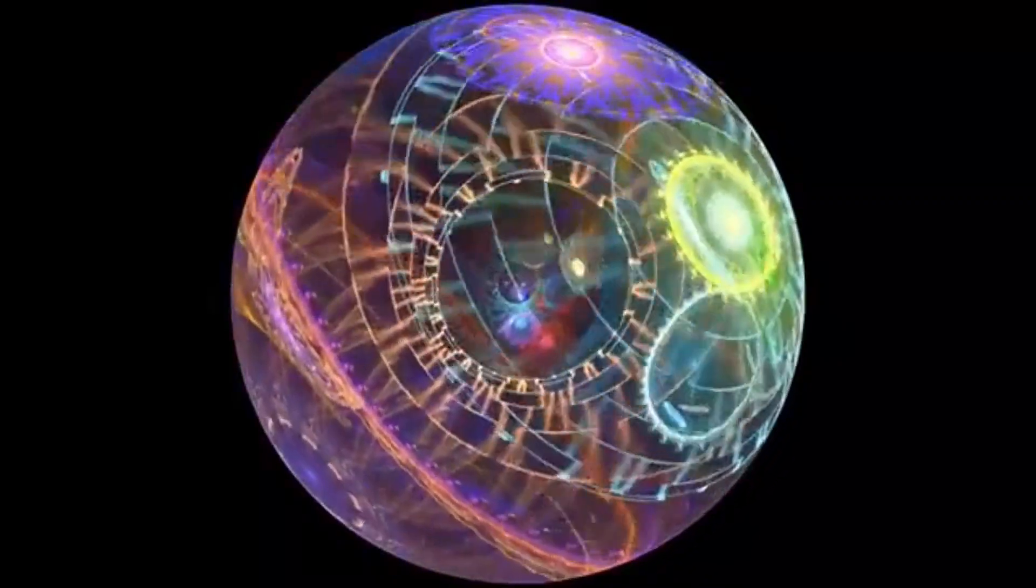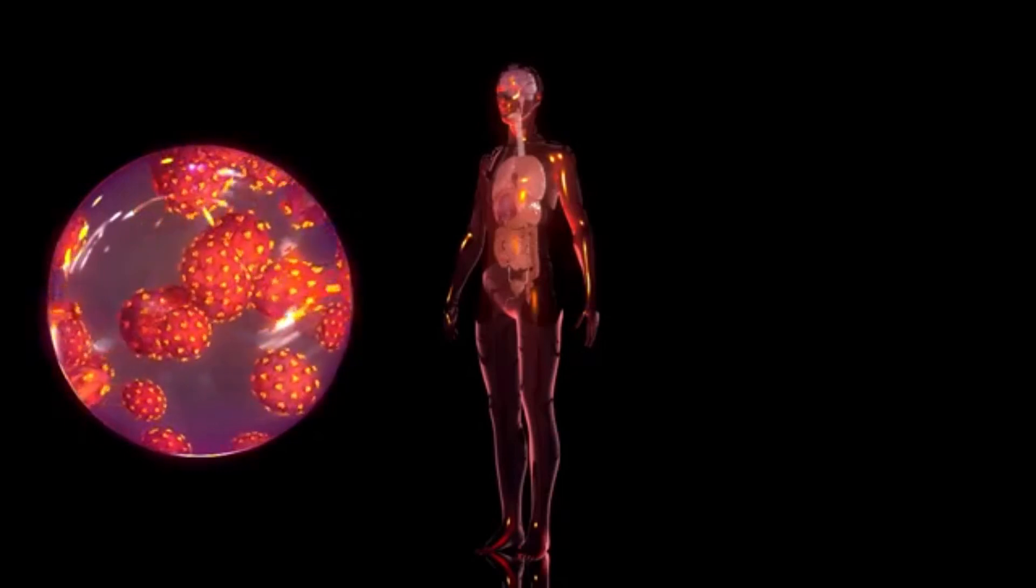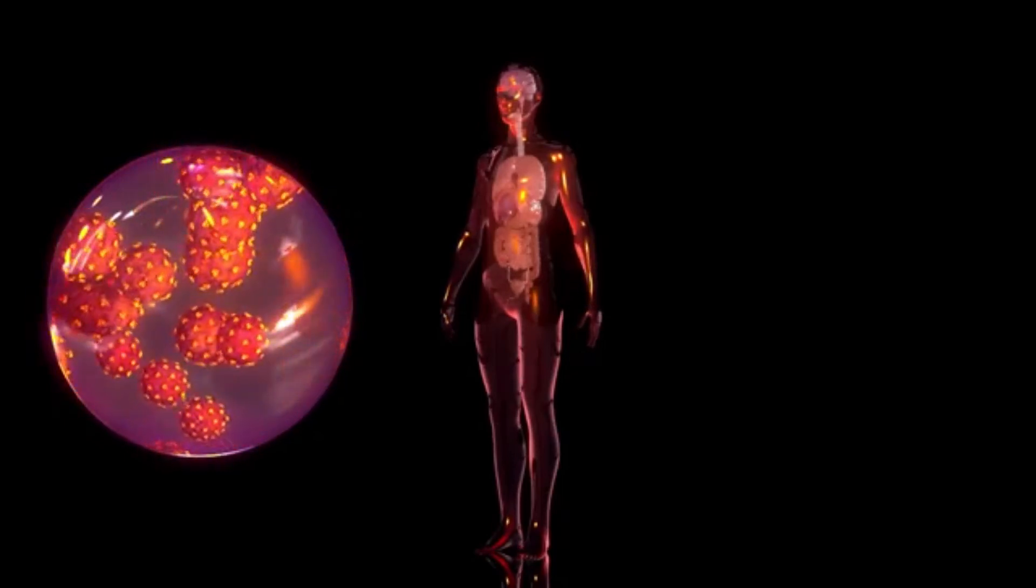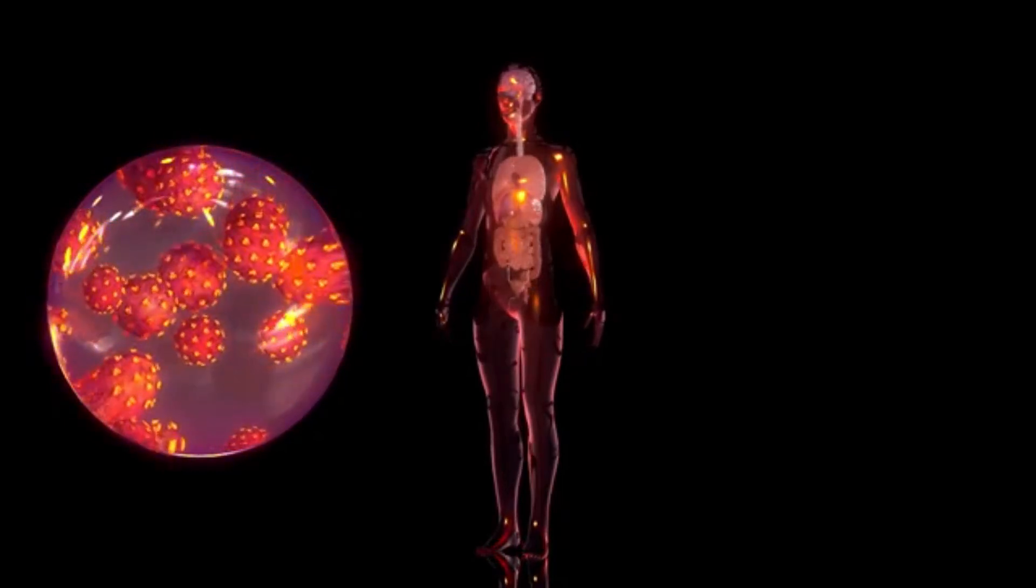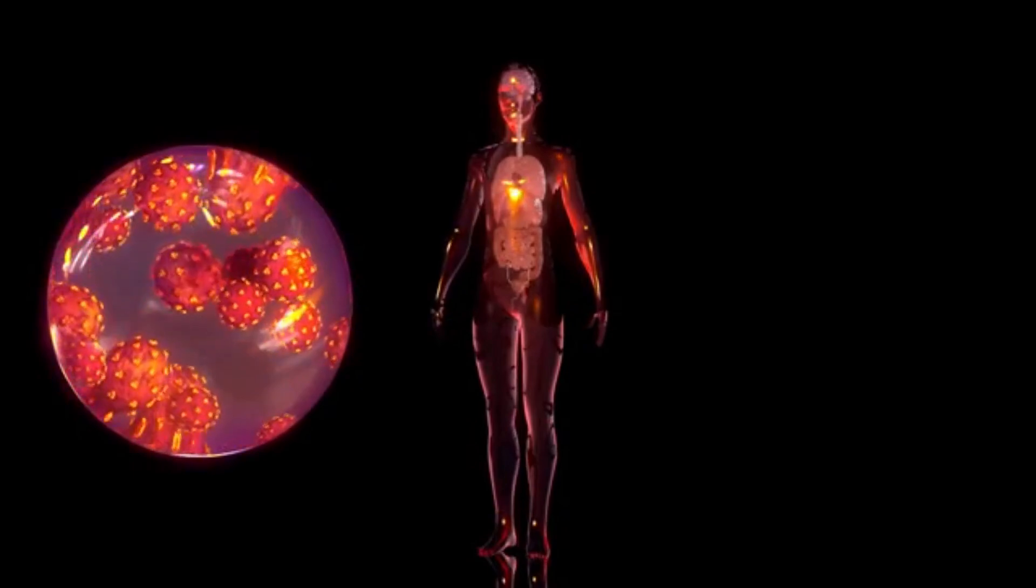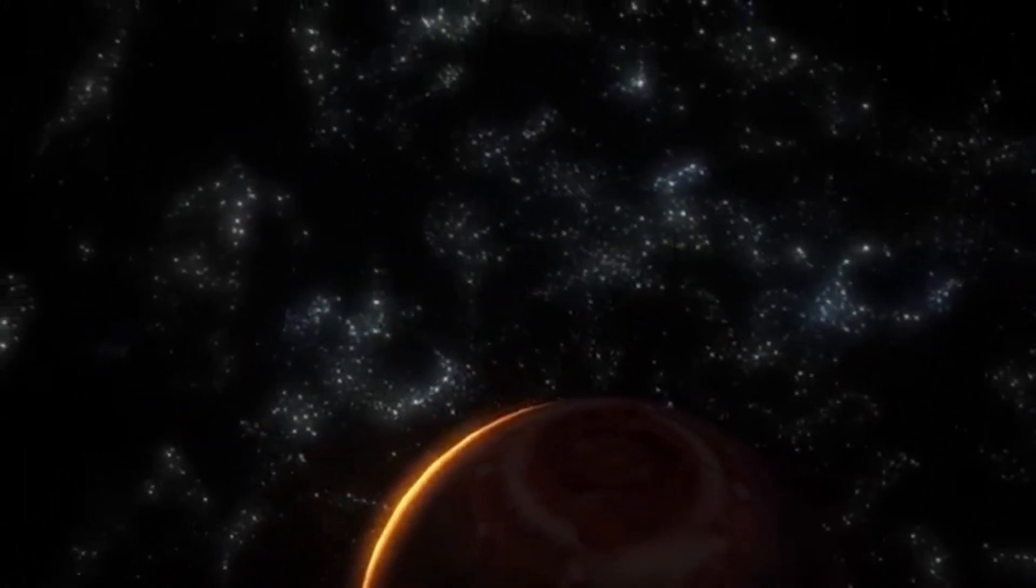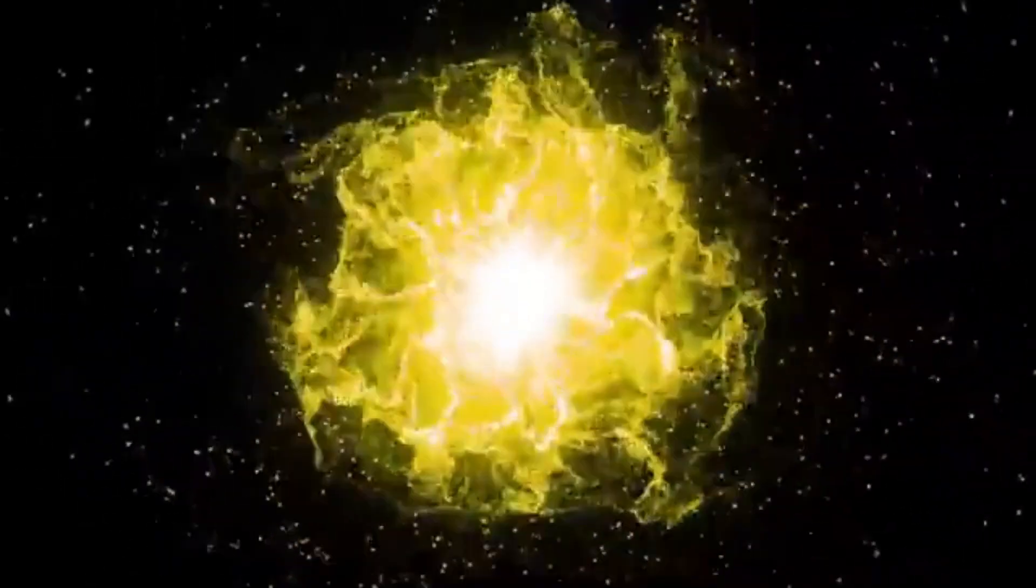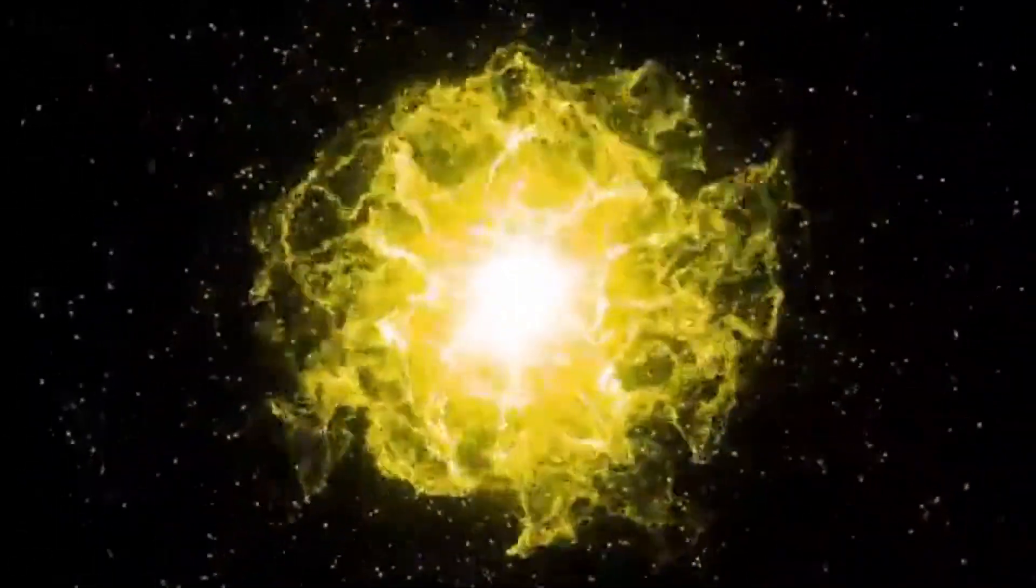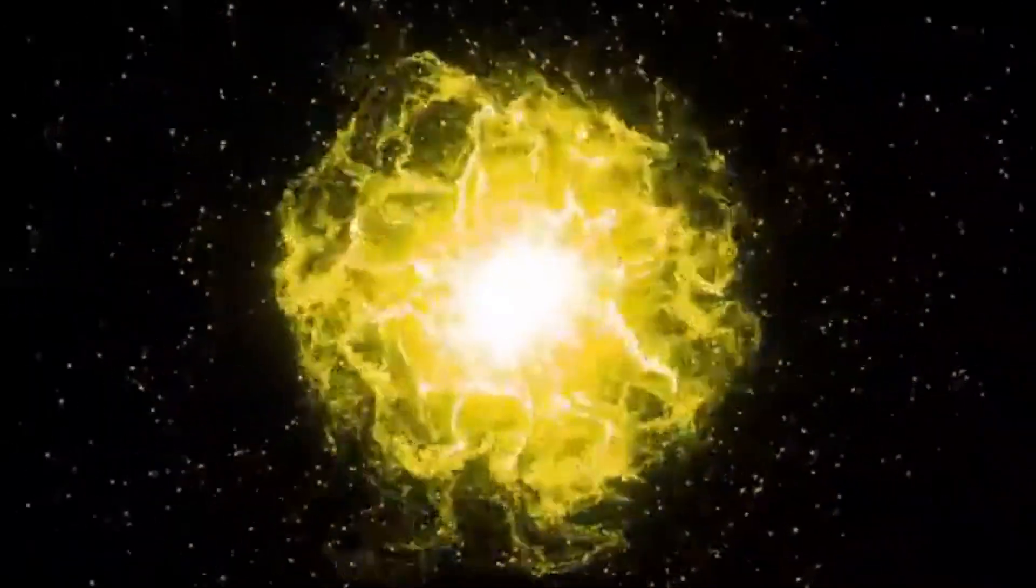The closest star system to us, Alpha Centauri, is 4.3 light-years away. Even traveling at the speed of light, it would take over 4 years to get there. Now imagine trying to reach Alpha Centauri using the same speed as the Voyager probe at 38,000 miles per hour. It would take about 70,000 years. These numbers reflect the staggering scale and isolation of star systems across the cosmos.